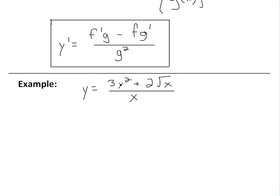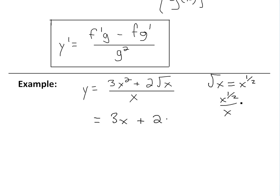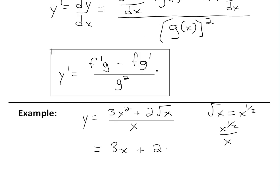You can just divide both terms in the numerator by x. So 3x squared divided by x gives 3x. Then for the second term, the square root of x equals x to the one-half. When you have x to the one-half divided by x, you subtract the powers. You can see more of this in the power functions and their properties video linked below, as well as a proof for the quotient rule.